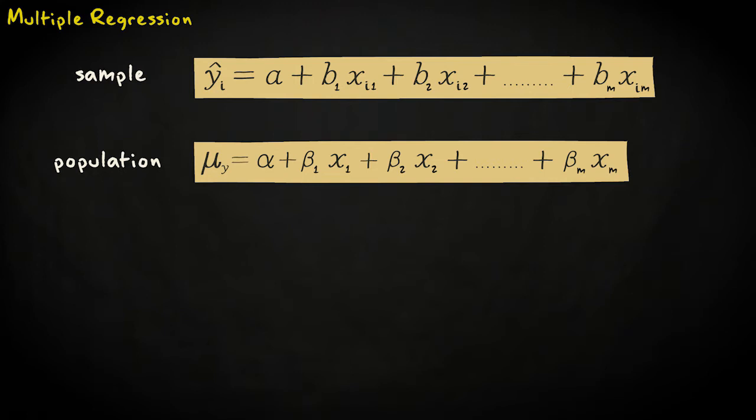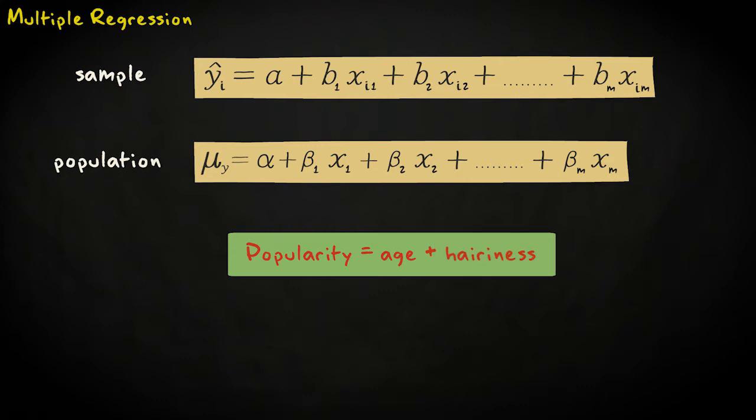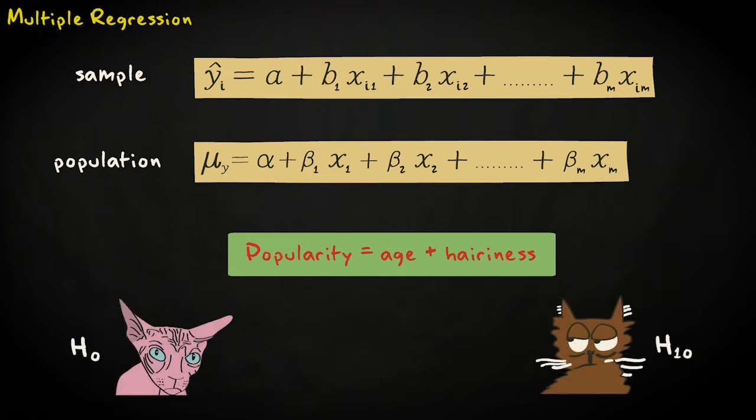To understand how to interpret this model, let's consider a simple example with only two predictors. Suppose we add hairiness as a predictor to model video popularity. Hairiness is rated on a scale between 0 and 10, with 0 meaning hairless, and a 10 meaning long-haired, like a Persian cat.